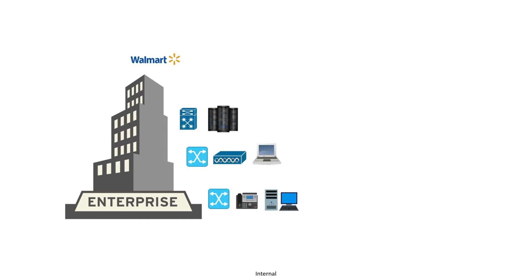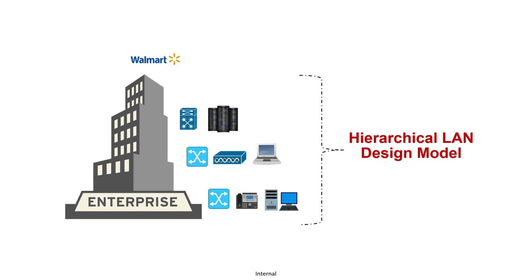Imagine a massive organization like a Walmart. These types of organizations have countless devices and users spread across multiple buildings or floors. So how do we ensure efficient communication, easy management, and high availability for such networks? The answer lies in the hierarchical LAN design model.